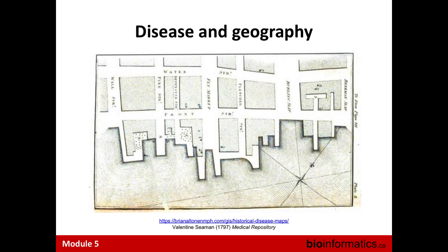The relationship between disease and geography has actually been studied for quite some time. You may know the story of John Snow and his cholera pump, where there were cases of cholera going on in London. He looked at where they were clustered, had a hypothesis it was around a pump, removed the pump handle, and the outbreak was over. But he's not the only one who's done this. Before John Snow, there was a gentleman named Valentin Seaman, who was studying yellow fever in New York.